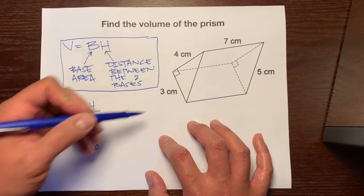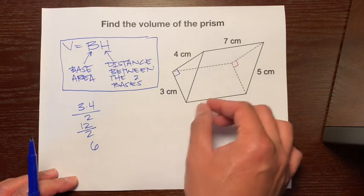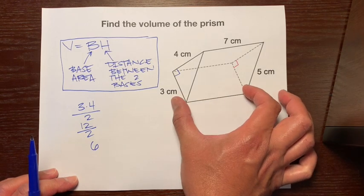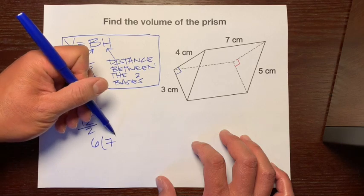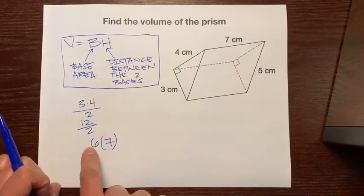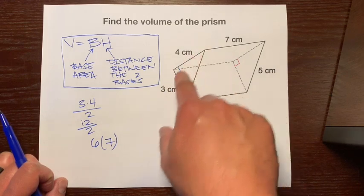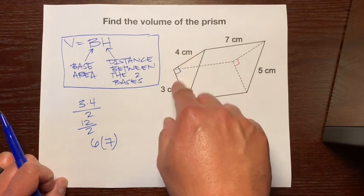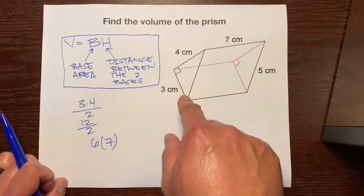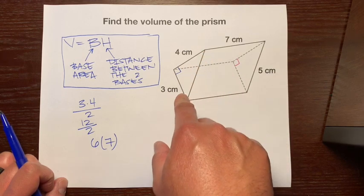So that's our base area, and we multiply that by the distance between the two bases, which is 7. Just think about what we just did. We figured out the base area. This tells us how many squares fit on this one base, or how many cubes fit on this one layer.